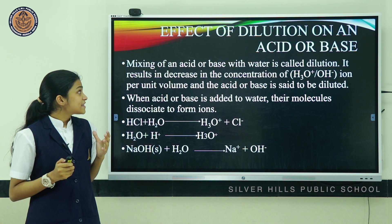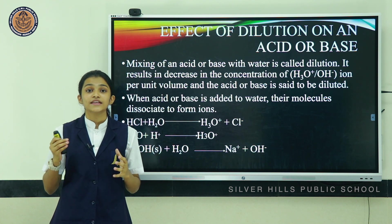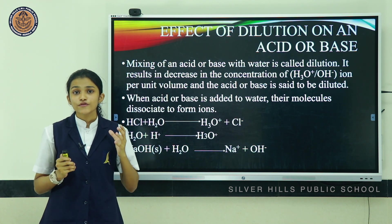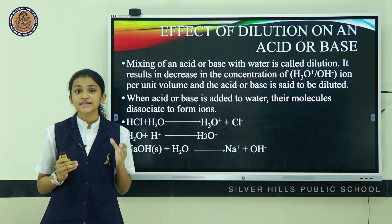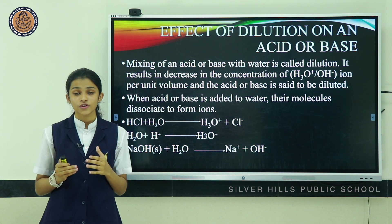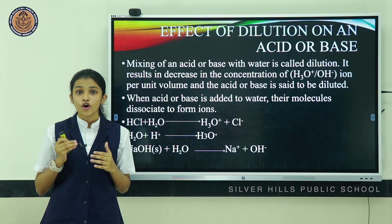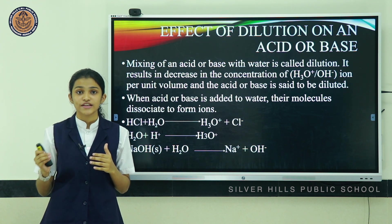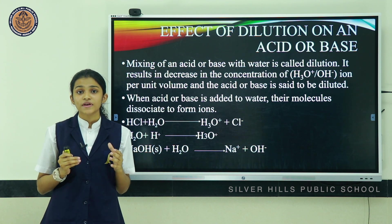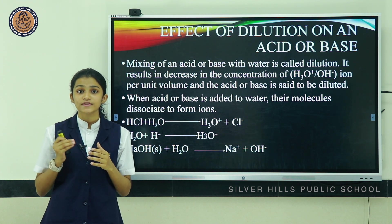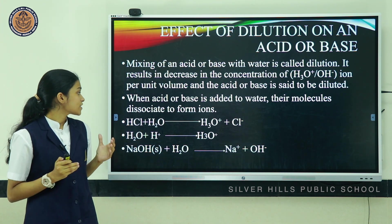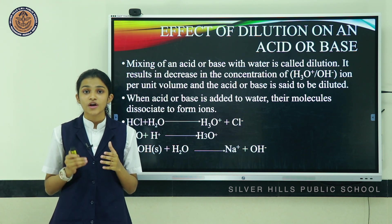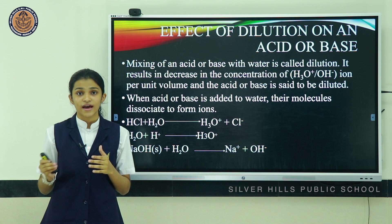Now let's see the effect of dilution on an acid and a base. Mixing of an acid or base with water is termed as dilution. It results in the decrease in concentration of hydronium or hydroxide ions per unit volume, and the acid or base is said to be diluted. When acid or base is added to water, their molecules dissociate to form ions — for example, hydrochloric acid reacts with water to produce hydronium cation and chloride anion.